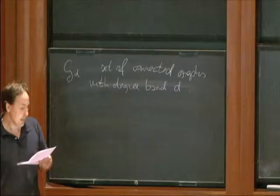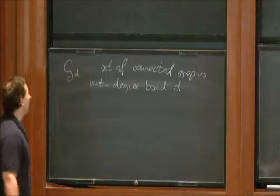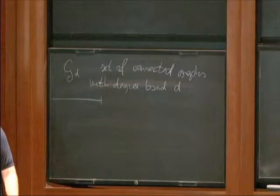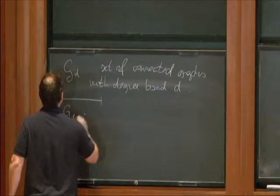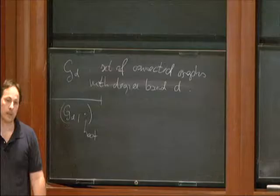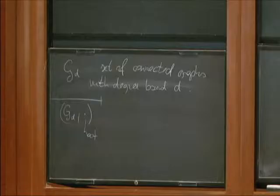Let me define Benjamini-Schramm convergence. There was some kind of definition before, but certainly not my type of definition. Before we go into that: there is a very natural convergence on graphs if they are rooted. For rooted bounded degree graphs — G_D with the root — that's a very natural topological space. Two guys are close if they coincide on a huge ball around the root. This gives rise to a convergence, and this space is compact.